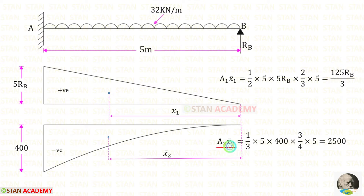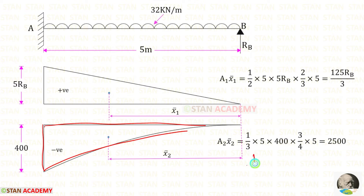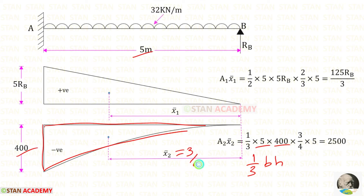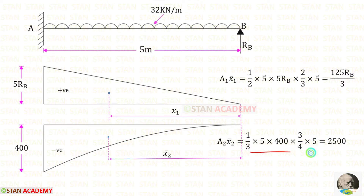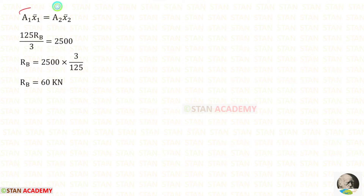Now let us find area 2 × x̄₂. It is a second-degree parabola, so the area formula is 1/3 × b × h. Here breadth is 5 and height is 400. The centroid distance is 3/4 × b = 3/4 × 5. After calculation, area 2 × x̄₂ = 2500. Setting area 1 × x̄₁ = area 2 × x̄₂ and solving, we get Rb = 60 kN.